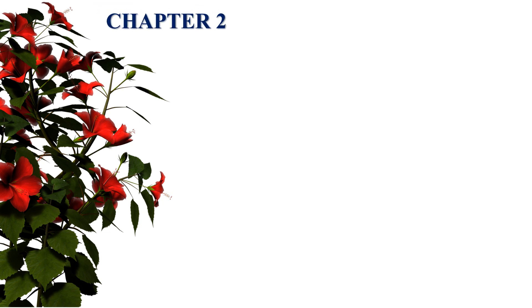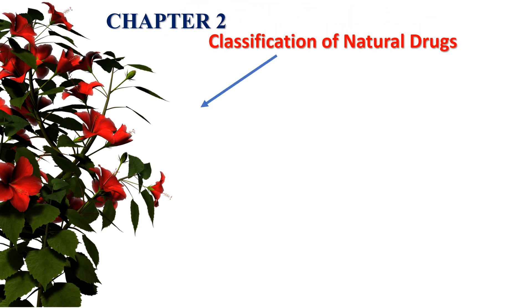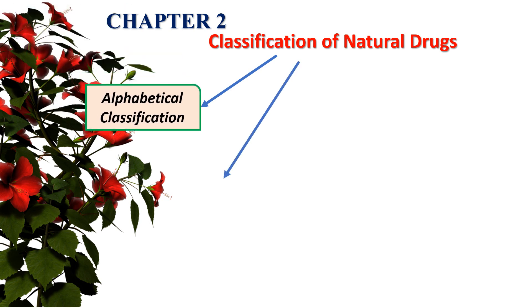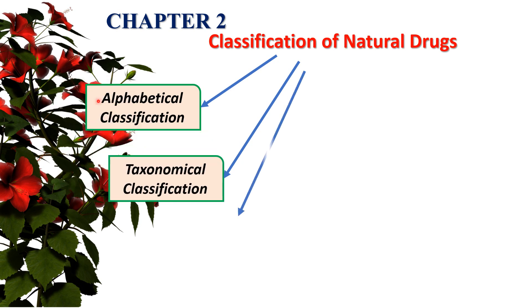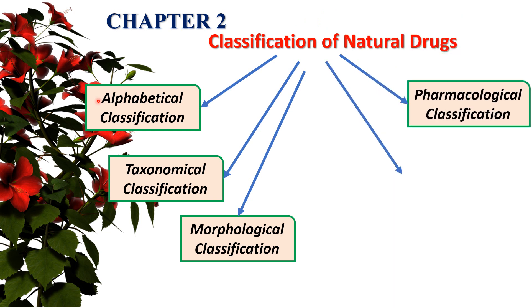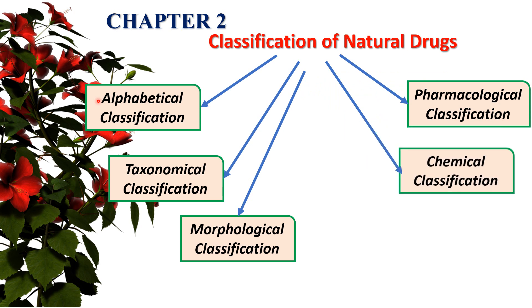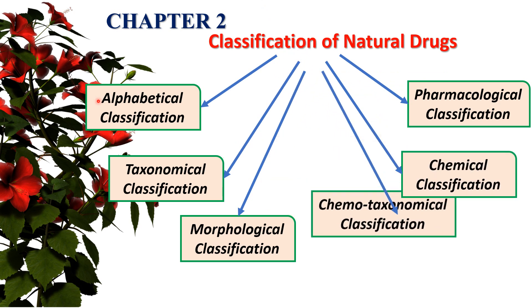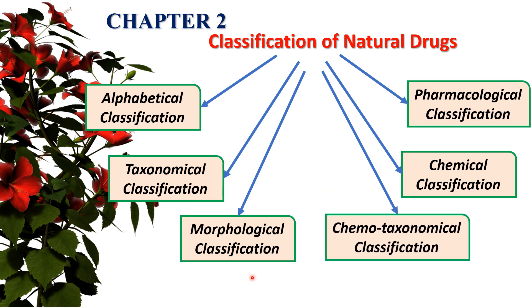Chapter two covers the classification of natural drugs. We can classify natural drugs by six types of classification: alphabetical, taxonomical, morphological, pharmacological, chemical, and chemotaxonomical classification. So any natural drug obtained from natural sources can be classified using these six types.